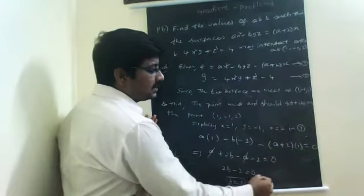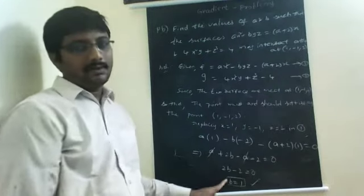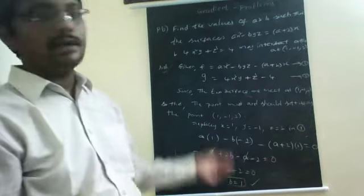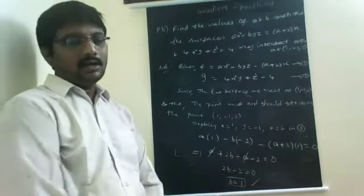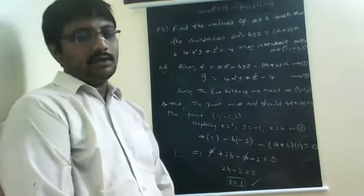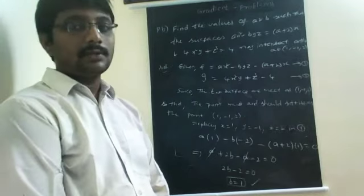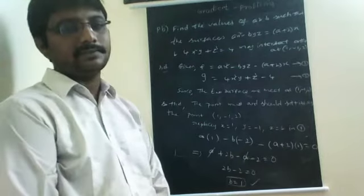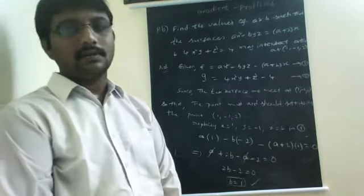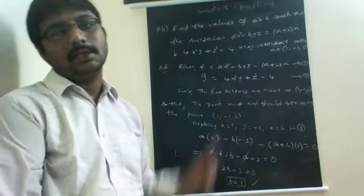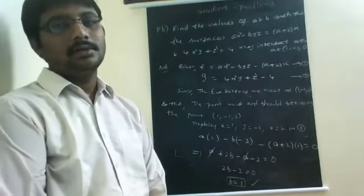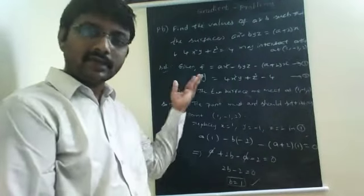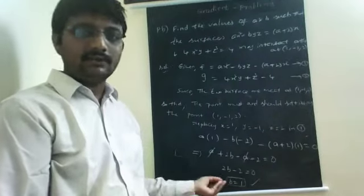This implies B equals 1. So that is one of the constants. We have found the value of B equals 1, obtained by replacing the given point in the first surface, because the two surfaces are meeting orthogonally at this point, so the point must satisfy both surfaces.